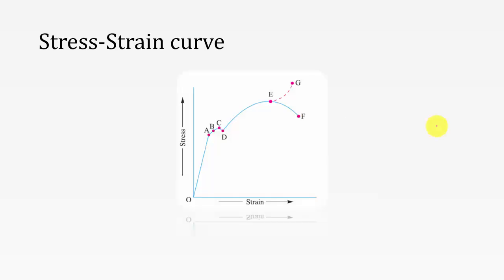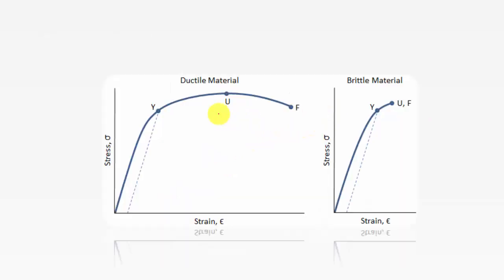The stress-strain curve for a ductile material has points O, A, B, C, D, E, F, and G. Comparing ductile and brittle materials: in ductile material the material undergoes plastic deformation after the elastic limit, whereas in brittle materials there is no plastic deformation — it breaks directly. The range O to A is the proportional limit, where stress is directly proportional to strain — this is Hooke's law, applicable only up to point A.